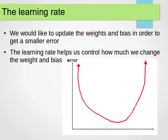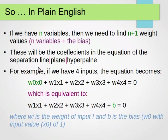Yes, the change is zero. So in plain English, let's say we have n variables or n inputs or n features in our data, normally numerical data. Then we need to find n plus 1 weight values because we have n variables.